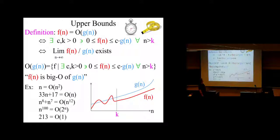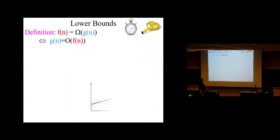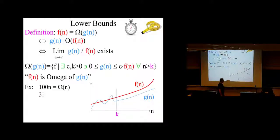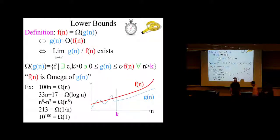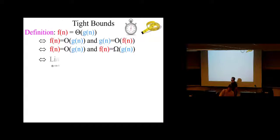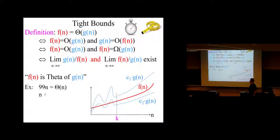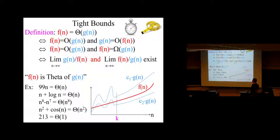Similarly, we have omega — those are lower bounds, asymptotic lower bounds on running times or space consumption or whatever else. And by the way, these are not restricted to algorithms. Big O, omega, theta, little O — these apply to arbitrary mathematics or growth rates, not necessarily even to do with algorithms.